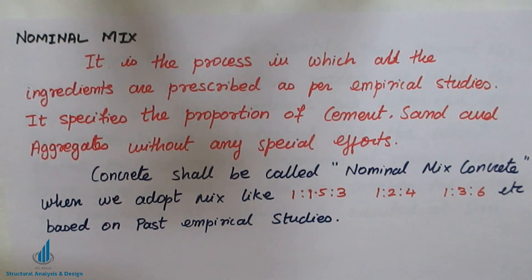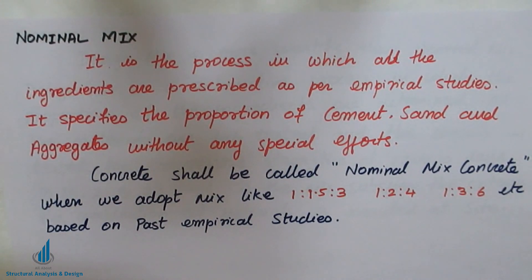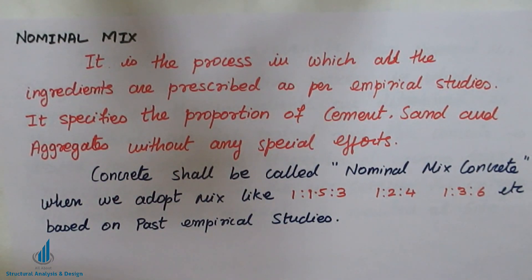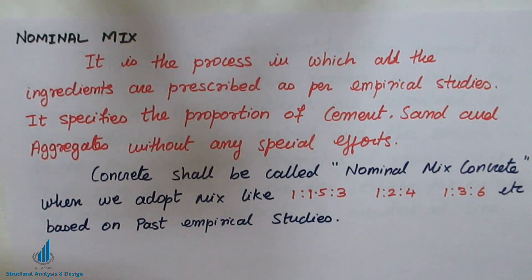Nominal mix is essentially a prescriptive type of concrete — the proportions are pre-decided by past empirical studies. No special efforts are needed; there is no need to calculate specific gravity, water absorption, or gather any other laboratory data. For example, to produce M20 concrete we use 1:1.5:3, and for M15 concrete we use 1:2:4. Whatever materials are available on site are mixed in these proportions to get the concrete.